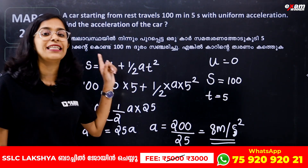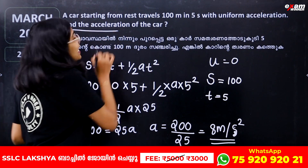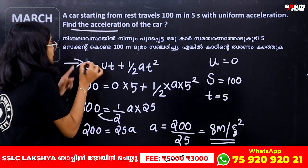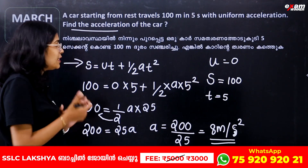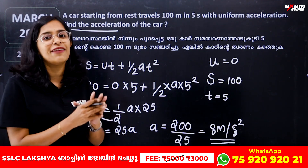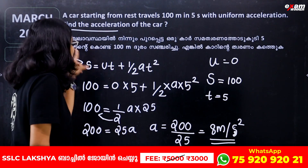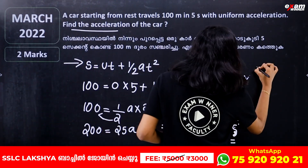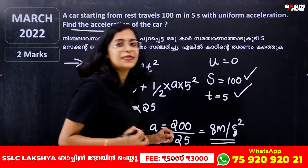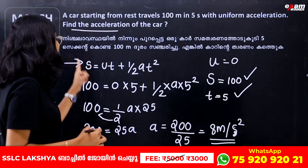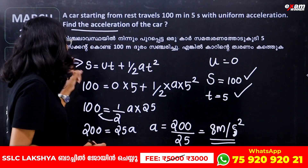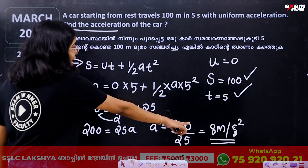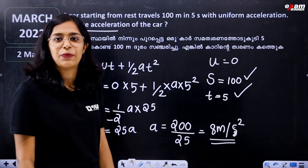So the acceleration of the car is 8 meters per second squared. We used the equation S equals UT plus half A T squared, where S is displacement, U is initial velocity, T is time, and A is acceleration.